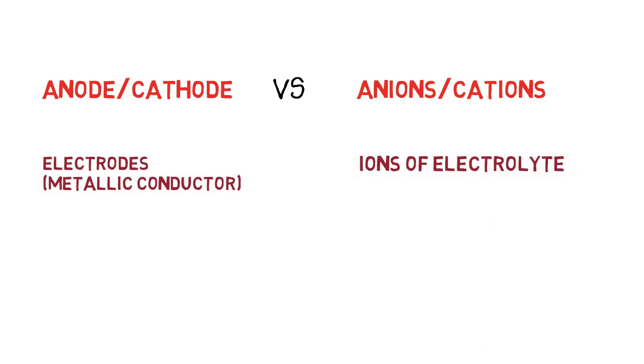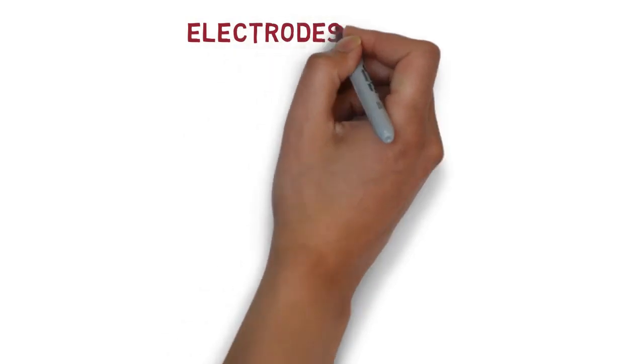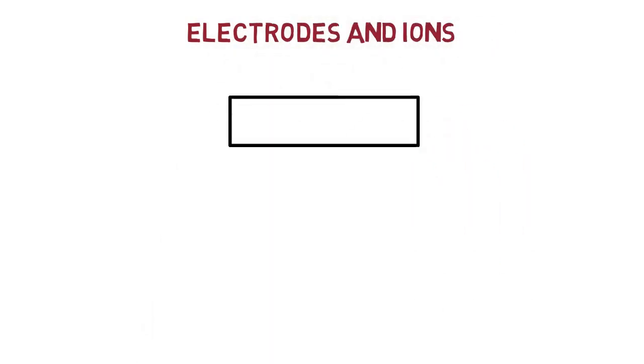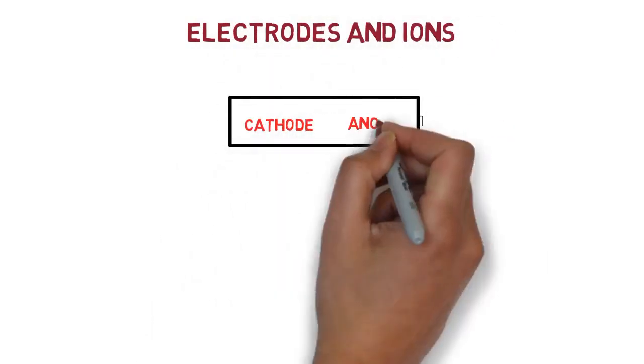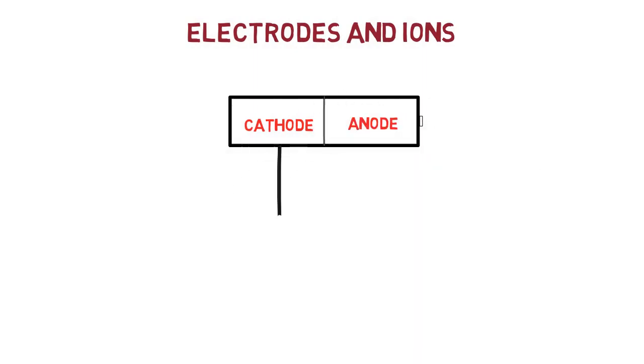You may be confused with electrodes and ions. To understand these two terms, take a battery and two wires. Now connect one wire at cathode and other at anode of the battery. Take a beaker and fill it with water.